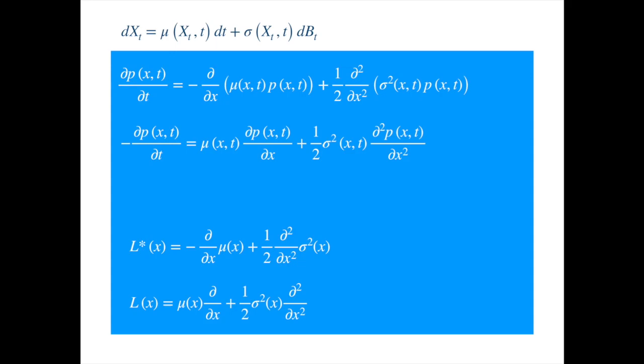So if you have a conditional probability density, which describes the probability density of the process going from x0 at time 0 to x at time t, then the forward equation describes the dynamics of the probability density in terms of the forward variables, this x and t, and the backward equation describes the dynamics in terms of the backward variables, x0 and t0.